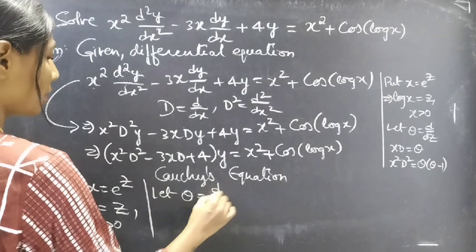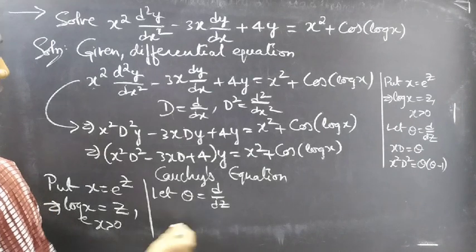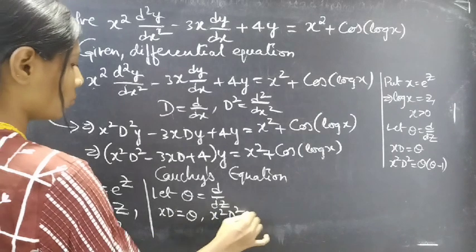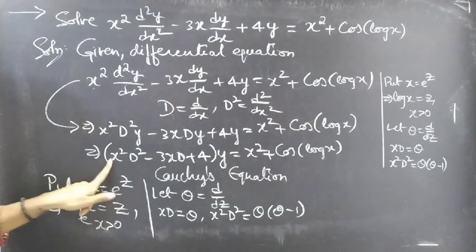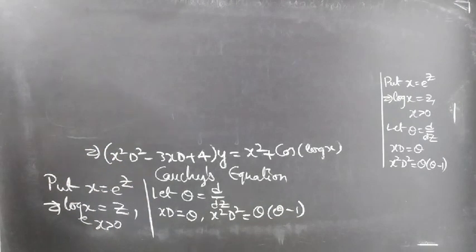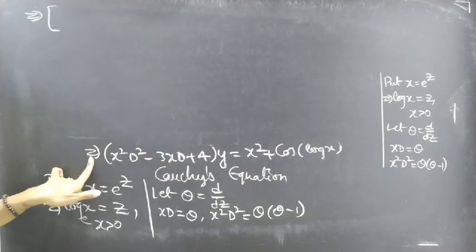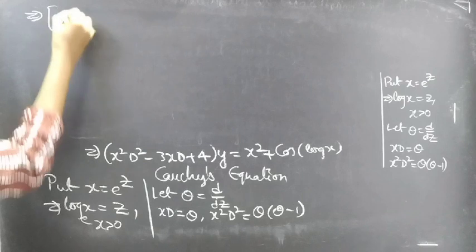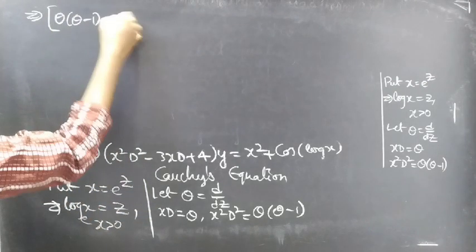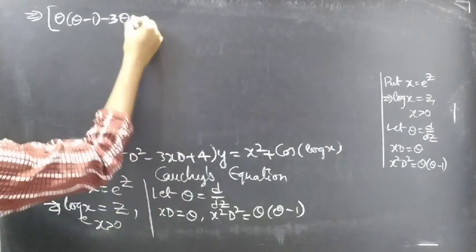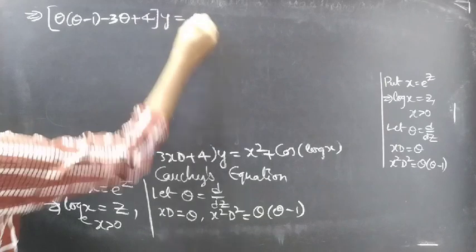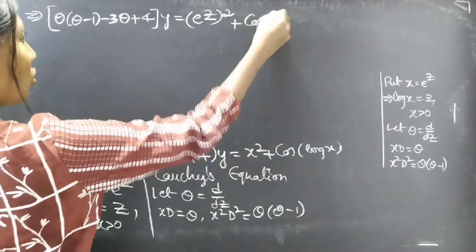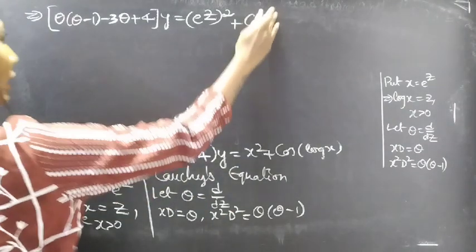Let theta equal to d/dz, where theta is a differential operator with independent variable z. Then xD equals theta, and x²D² equals theta(theta minus 1). Replacing x²D², xD, and log x: we replace x²D² by theta(theta minus 1), xD by theta, and x by e^z, so log x becomes z. We get e^z whole squared plus cos z.